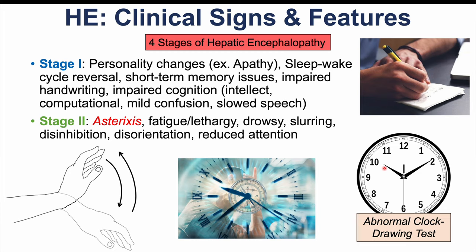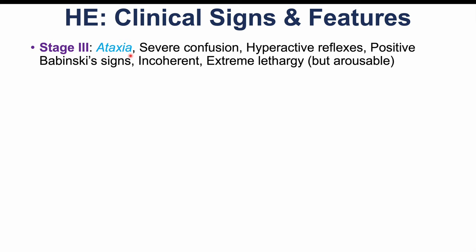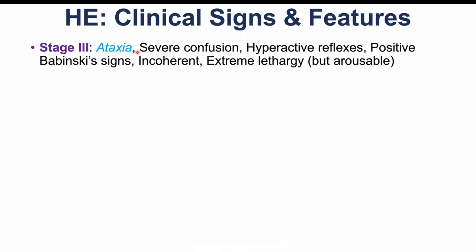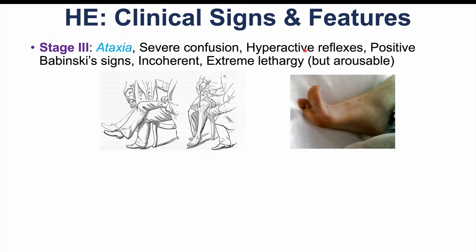As hepatic encephalopathy worsens into stage three, we see ataxia — the inability to properly coordinate bodily movements — along with severe confusion. Reflexes testing may show hyperreflexia and a positive Babinski sign, where the toes point upward rather than downward. Patients often become incoherent and have extreme lethargy, but they are still arousable.